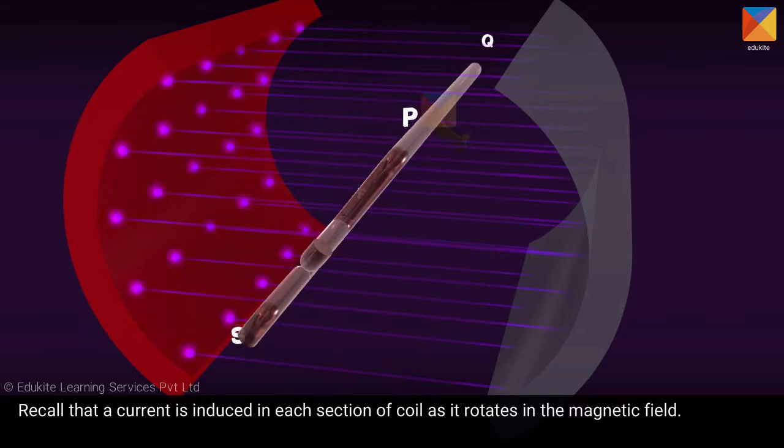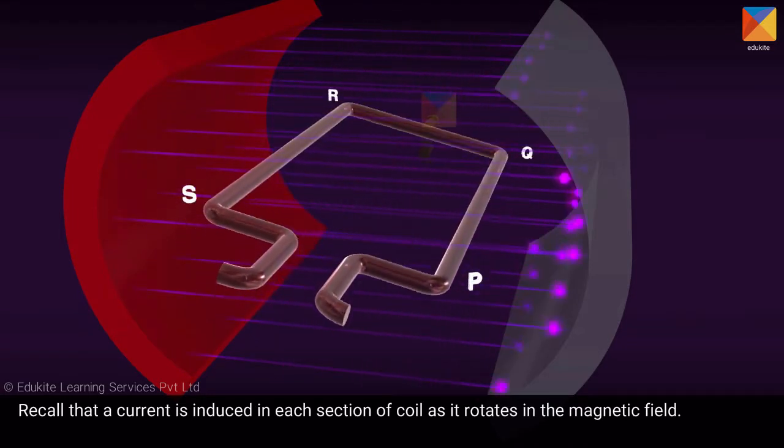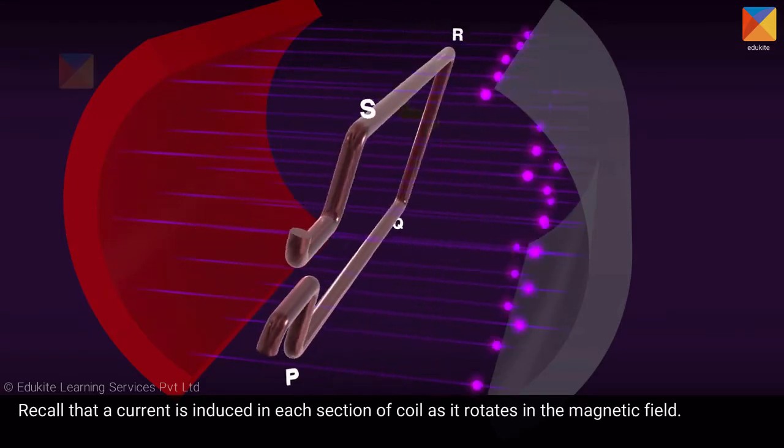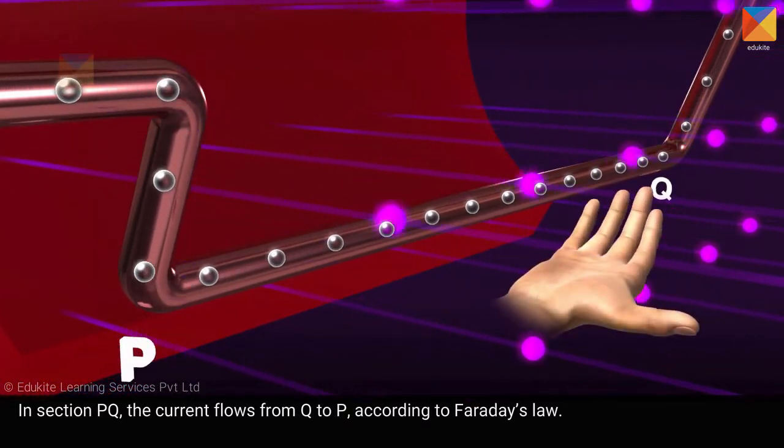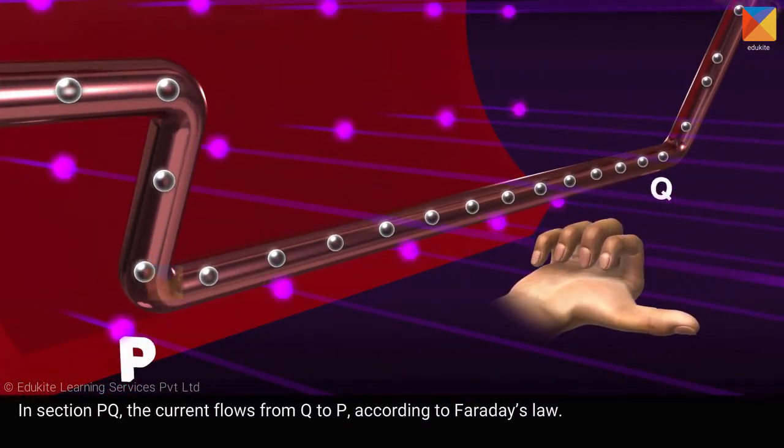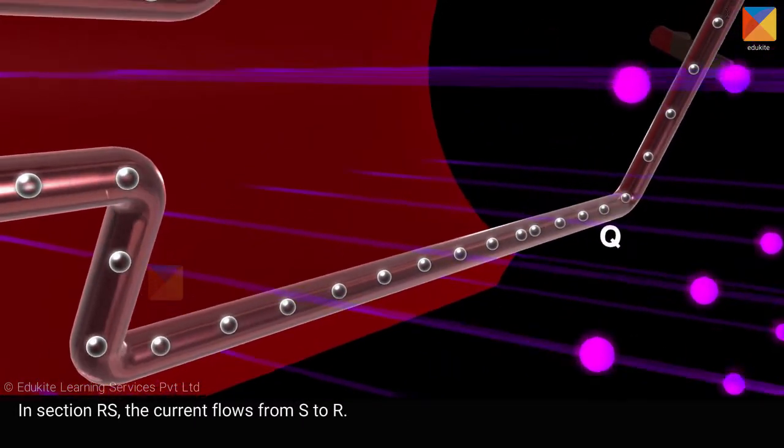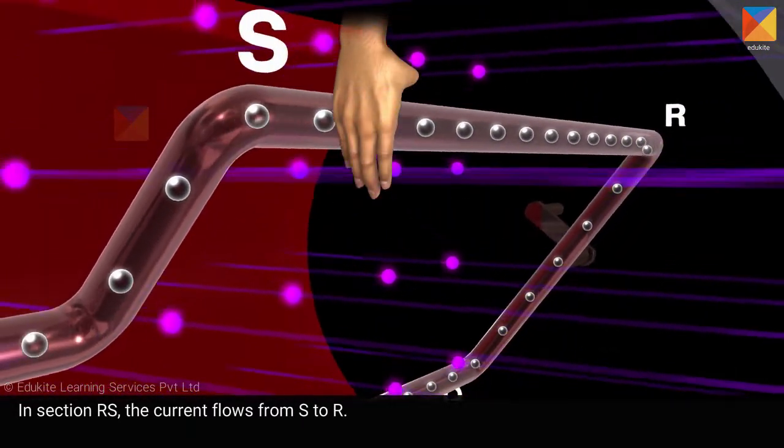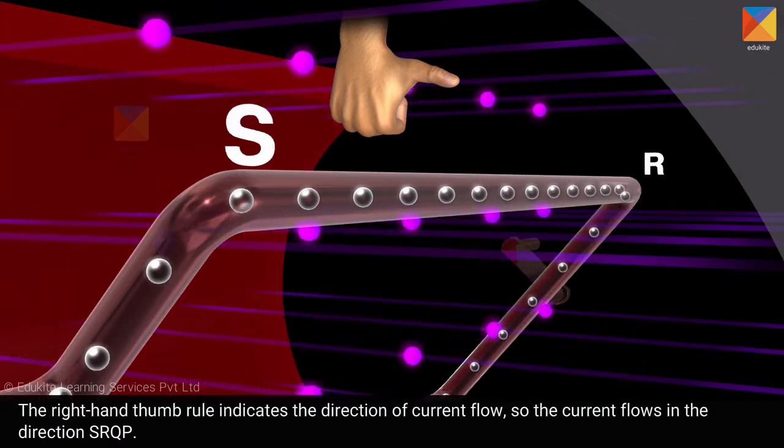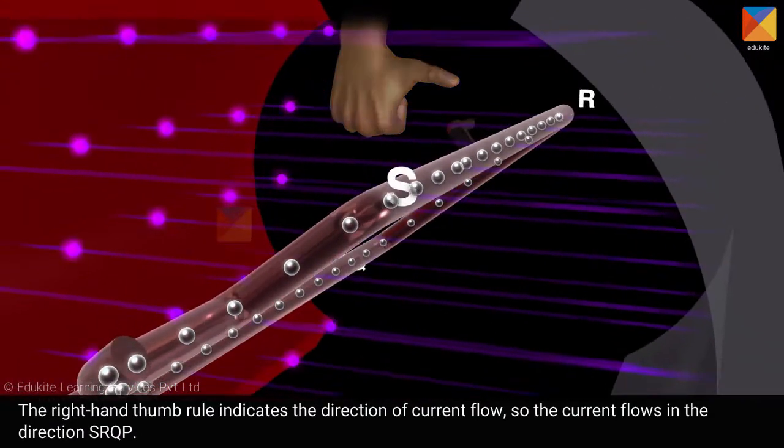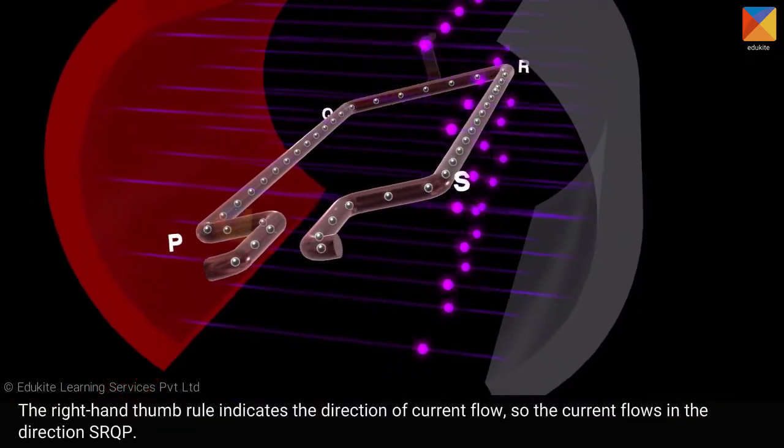Recall that a current is induced in each section of coil as it rotates in the magnetic field. In section PQ, the current flows from Q to P, according to Faraday's law. In section RS, the current flows from S to R. The right-hand thumb rule indicates the direction of current flow, so the current flows in the direction SRQP.